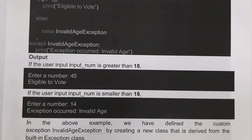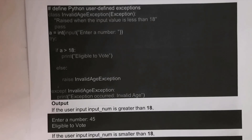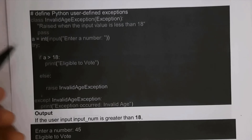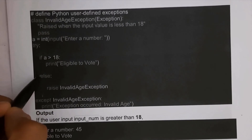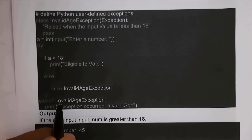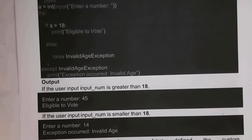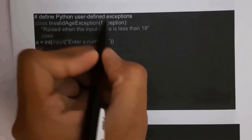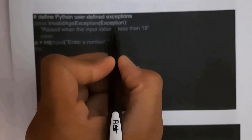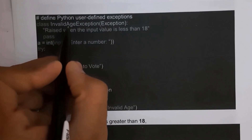When the program runs, it prompts 'enter number'. If I enter 45, I get output 'eligible to vote'. If I enter 14, the condition 14 > 18 is not satisfied, so it skips the if block, enters the else block, raises InvalidAgeException, which is caught by the except block, and prints 'exception occurred: invalid age'. By using the built-in Exception class we can create user-defined exceptions in Python.